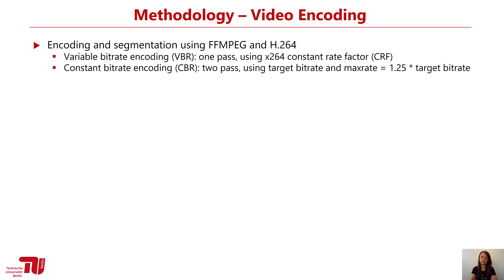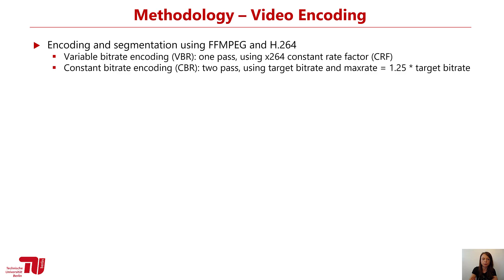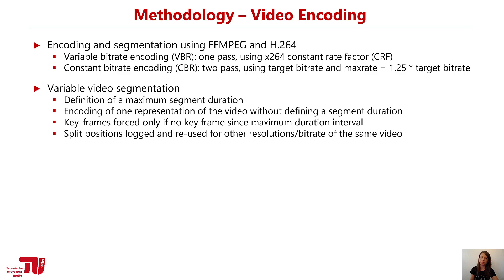The videos were encoded and segmented using FFmpeg and H.264, considering both variable bitrate (VBR) encoding and constant bitrate (CBR) encoding. For the variable segmentation, we defined a maximum duration which the variable segments are not allowed to exceed. We then encoded one representation without defining the segment duration, allowing the encoder to freely choose the segment duration between zero and the defined maximum. Keyframes are only forced if no keyframe has occurred since the maximum duration interval. We logged the split positions and reused them when encoding the video in other resolutions or bitrates, ensuring all quality representations share exactly the same split positions.